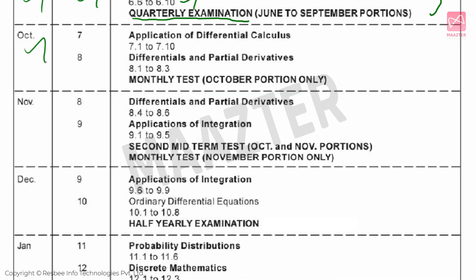Next, October. Chapter 7: Application of Differential Calculus — complete all topics. Then Chapter 8: Differentials and Partial Derivatives — topics 8.1 to 8.3 to be completed. Then the October Monthly Test portions are conducted.